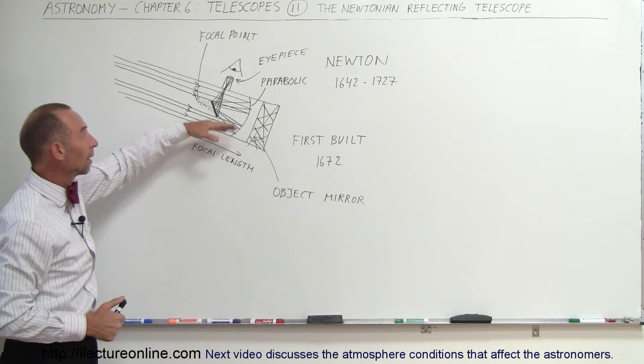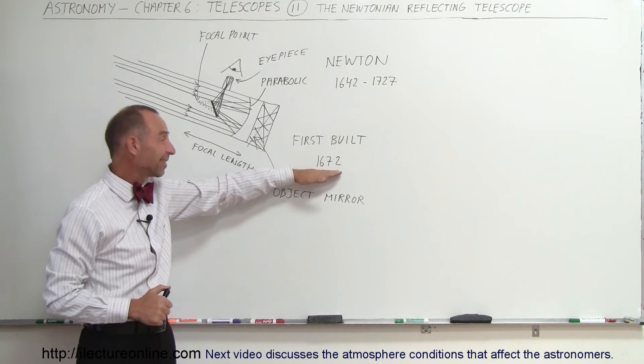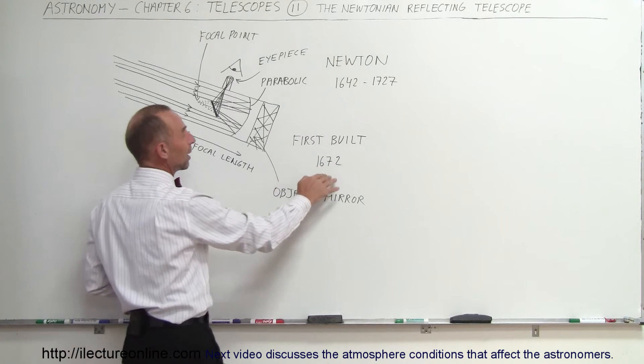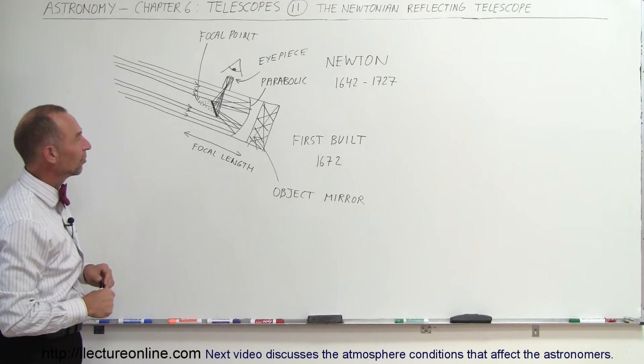So this new design that was built, or this telescope was built in 1672 by Newton. Notice Newton was about 30 years old when he built that telescope. Pretty ingenious to come up with this design.